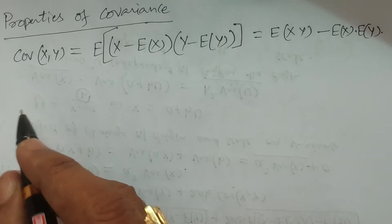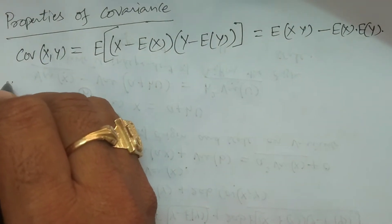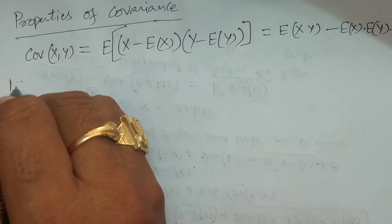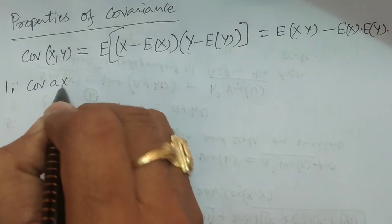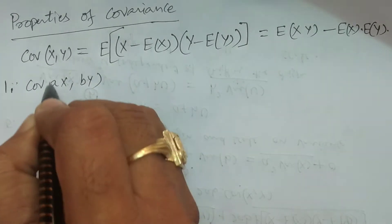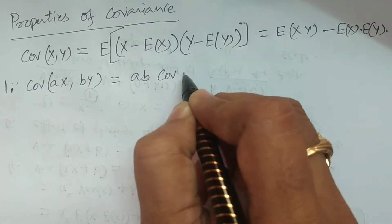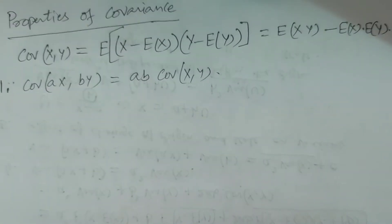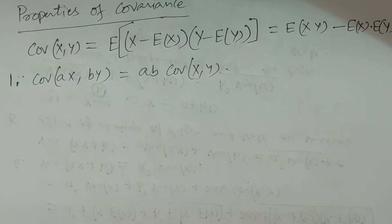Now the properties. Property number one: covariance of ax, by is nothing but ab into covariance of x, y. I will state this and give the proof.